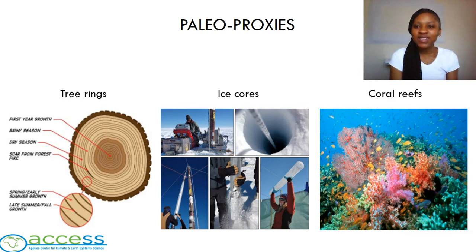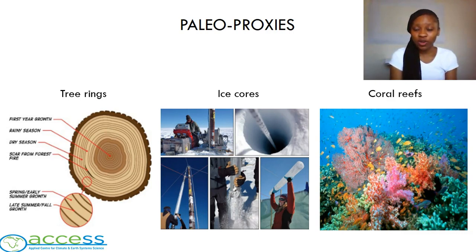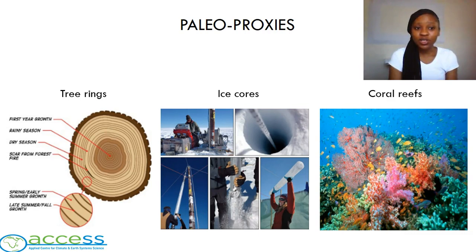Coral reefs are the remains of marine life, made through the secretion of calcium carbonate, which mainly comes from seashells. As we know, water is made up of hydrogen and oxygen, which results in oxygen isotopes being needed for the formation of coral reefs. The type of oxygen isotopes found within the coral reefs will help determine what temperatures were like in that area during the reef's formation. What we need to remember is that all three proxies discussed leave out a layer after a season or a year.